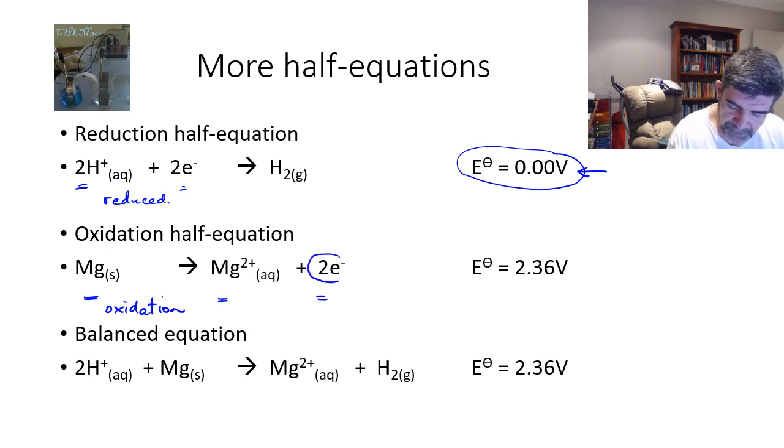The most important thing we need to remember is that the electrons must cancel out. So we need to make sure that the numbers of electrons that are being lost is equivalent to the number that are being gained. If they're not, then we may need to multiply one or other of our half-equations by a particular number in order to ensure that they are the same.